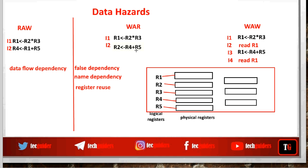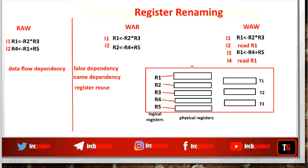Reusing registers never creates any issue if instructions are executed in program order. But if out-of-order execution is possible — for example, if i2 executes before i1, or i3 executes before i1 and i2 — it can lead to incorrect results. The solutions discussed so far, especially operand forwarding, are used for solving read after write data hazards. For write after read and write after write hazards, register renaming is the solution, since the problem is caused by name conflicts and more physical registers are available. Renaming the register solves the problem without unnecessarily stalling the pipeline.